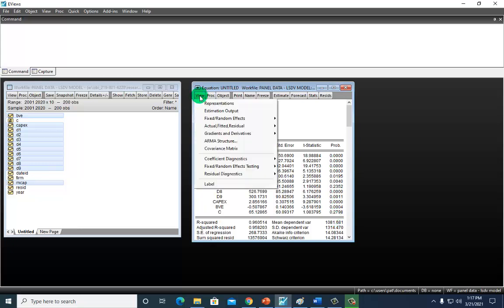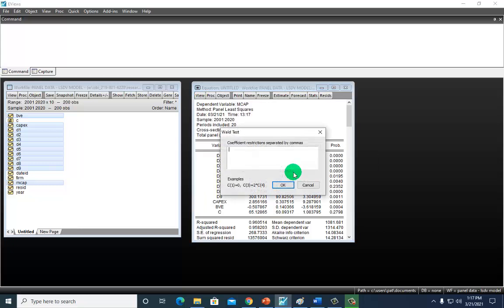I'm going to go to View, Coefficient Restrictions, Wald Test, and then type in the null hypothesis, which I pre-copied for a quick video, and OK.